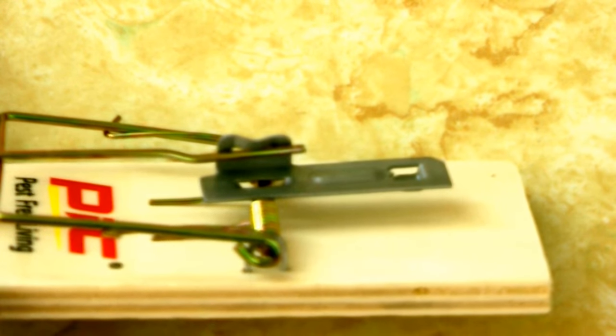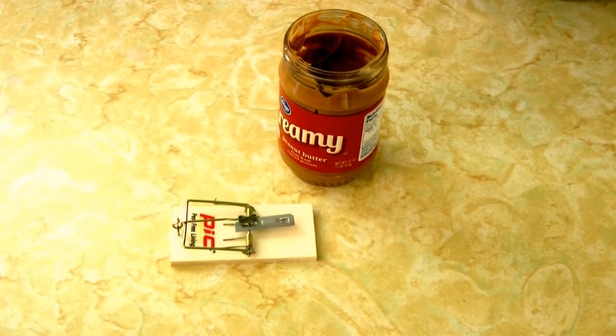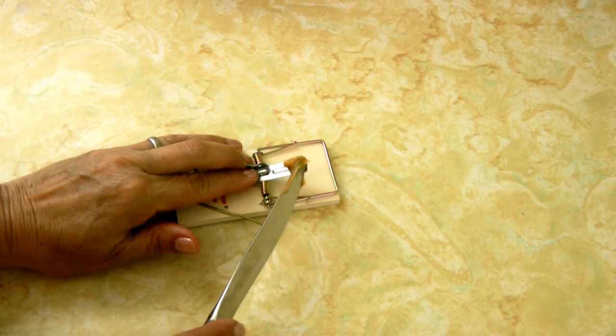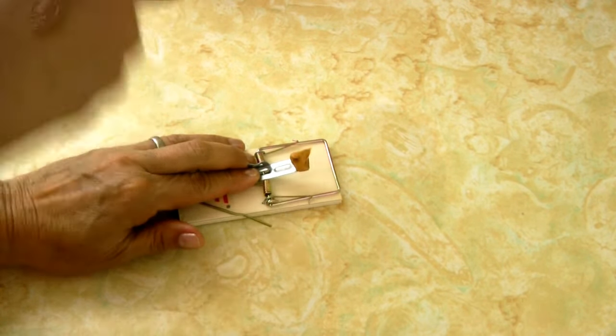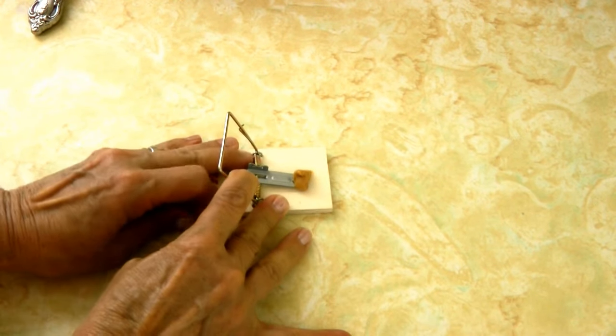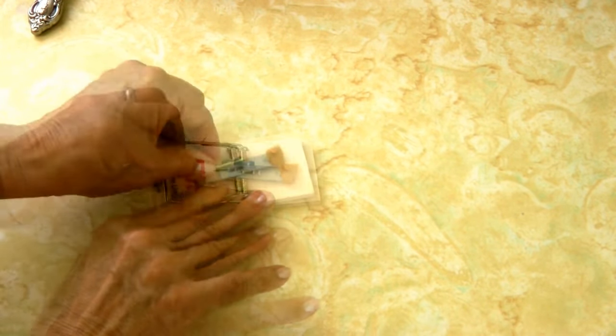Peanut butter is a bait that mice love, so spread a nice amount on the end of the bait mechanism. Pull back on the spring, then take the set pin and hook it over the little notch.